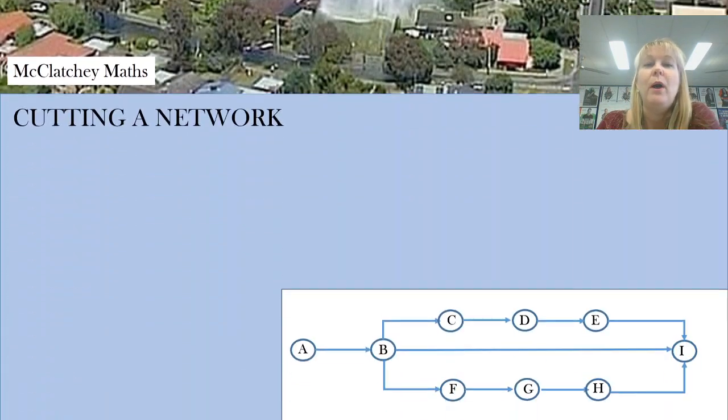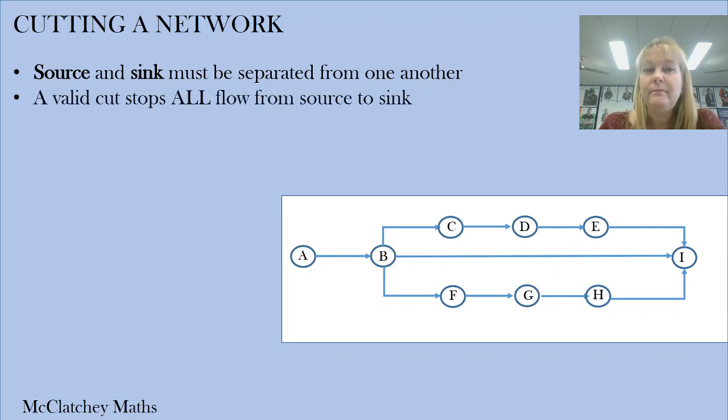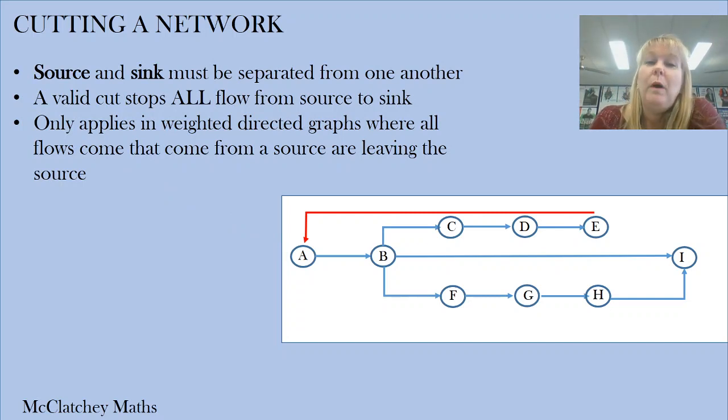Let's look at what we mean by cutting in a network. This is where we completely separate our source and sink from one another. This is what we call a valid cut - there can be no more flow from the source to the sink. This theorem only applies to weighted directed graphs. You'll notice this graph hasn't been weighted yet, but it is directed with arrows pointing from one direction to the other. This really only works when we're looking at flows coming out from a source and that source only. Here's an example where we've got flow coming back into the source. Our minimum cut theorem doesn't apply in these situations, and you probably won't find examples in your textbooks of networks like this.